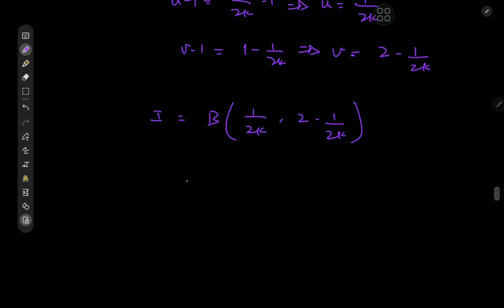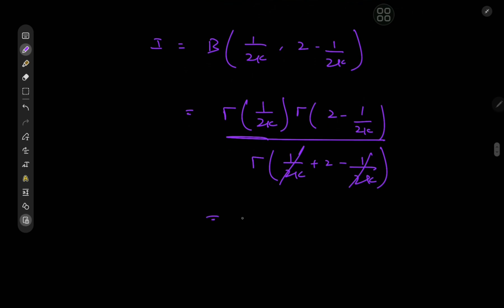So we have I equal to the beta function evaluated at 1/(2k) and 2 - 1/(2k). And now for the relation between the beta and the gamma functions, we know that this equals Γ of the first argument times Γ of the second argument divided by Γ of the sum of the arguments. We have I equal to Γ(1/(2k))Γ(2 - 1/(2k)) / Γ(2), which is 1 factorial, which is 1.